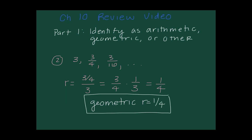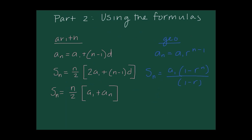Even though identifying sequence type is a skill we need for every problem, some problems only require that. The second part of the test — the majority — involves using formulas. We talked about five different formulas and you absolutely need to have them memorized. Beyond memorizing them, knowing when to use which formula is critical: check if it's arithmetic or geometric, and whether you need the nth term formula or the sum formula.